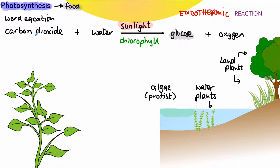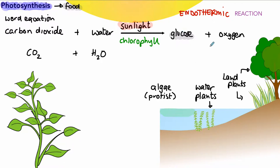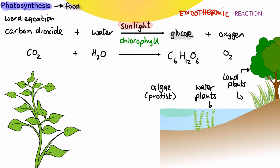We can also look at a formula equation by changing words into their formulas. Carbon dioxide is CO₂, water is H₂O, and oxygen is O₂. For glucose, we have carbon, hydrogen, and oxygen present because it's a carbohydrate — the formula is C₆H₁₂O₆. You should at least be able to recognize that as glucose. This equation is not balanced, but it's easy to remember: just add three sixes in the correct positions to give the balanced equation for photosynthesis.